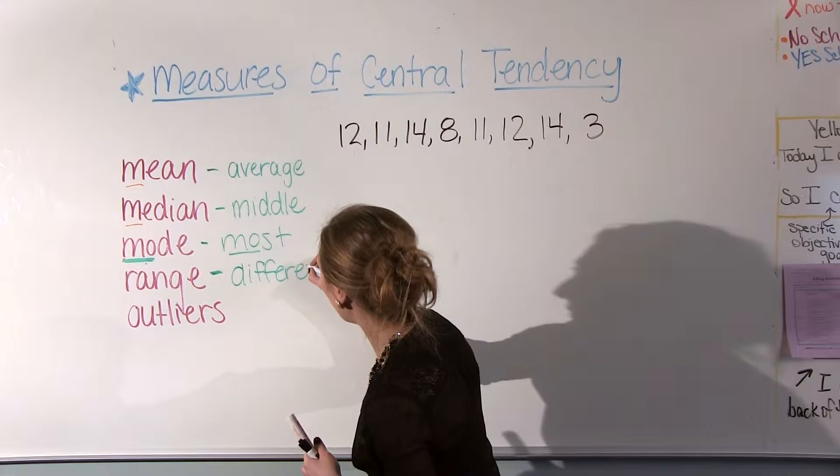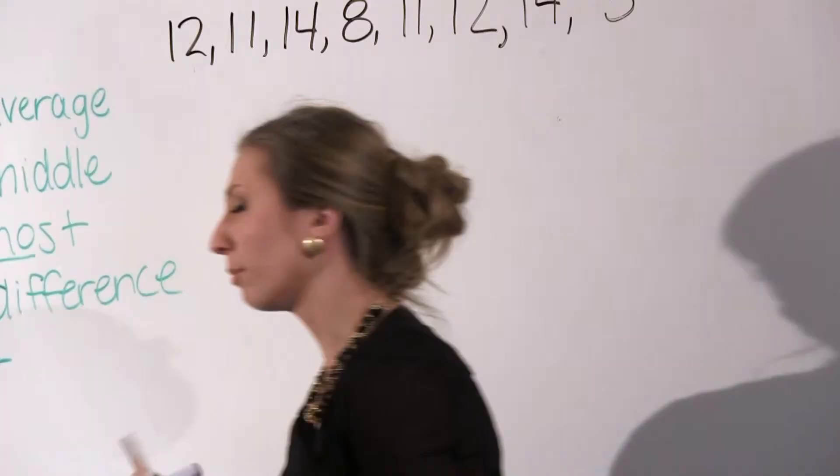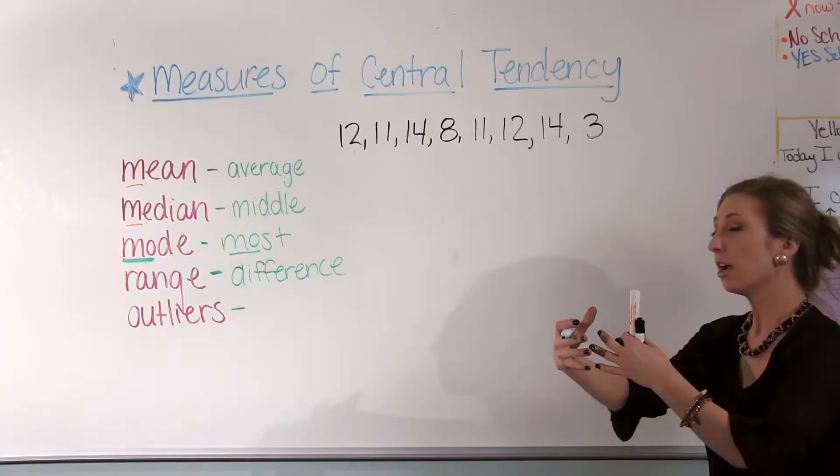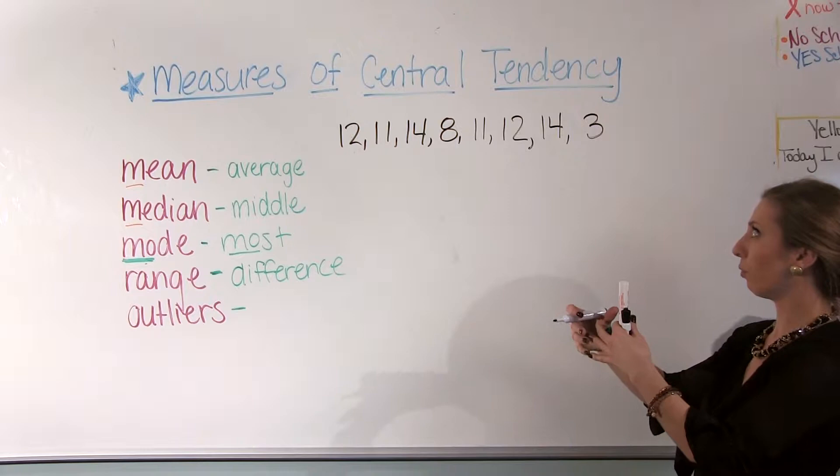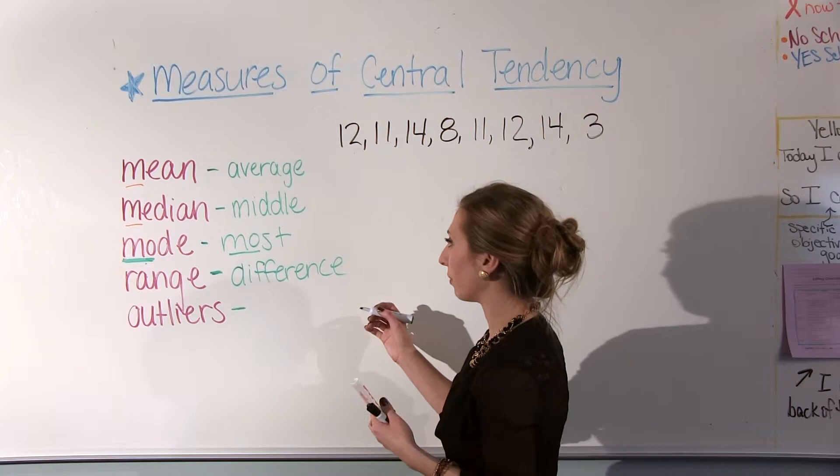And then any outliers are numbers that are going to be outside of our data, or outside the main, basically a number that is furthest from your data or something that's way different than anything else. An outlier, or like an outsider, think of an outsider. So it's something that is way different than the rest.